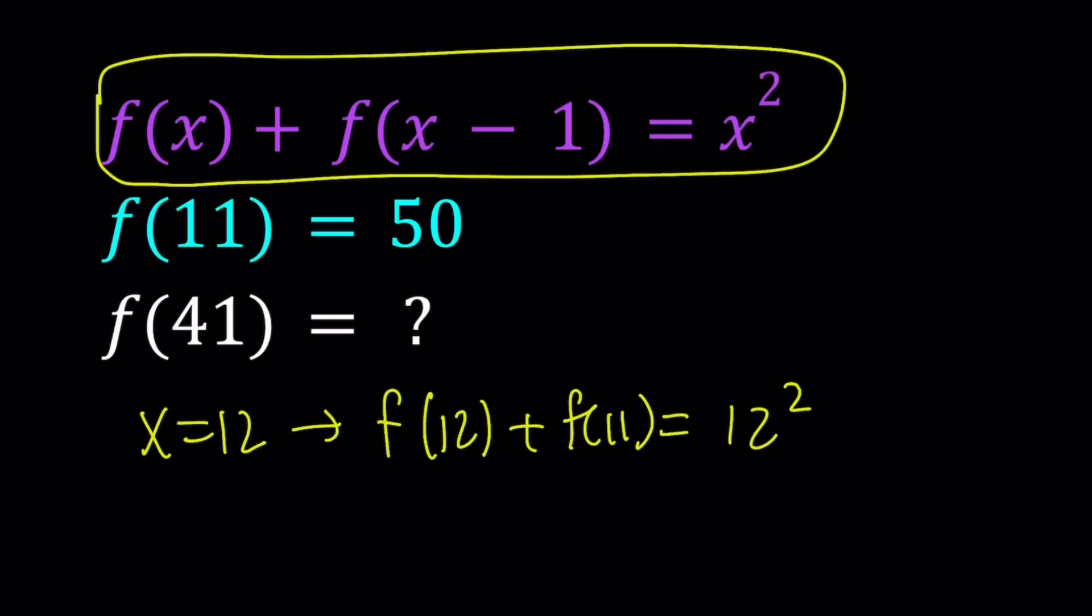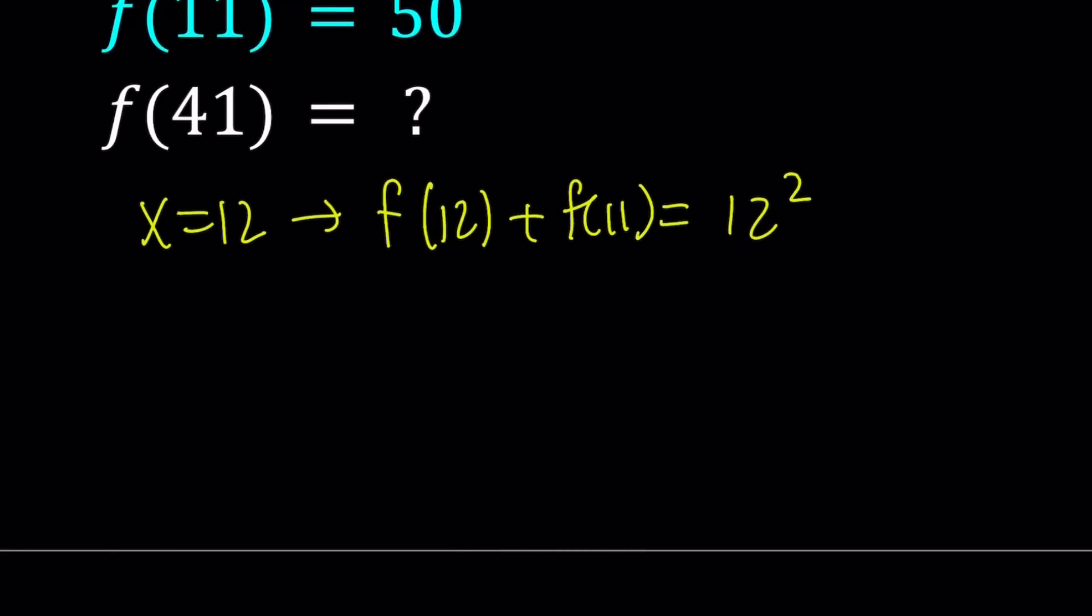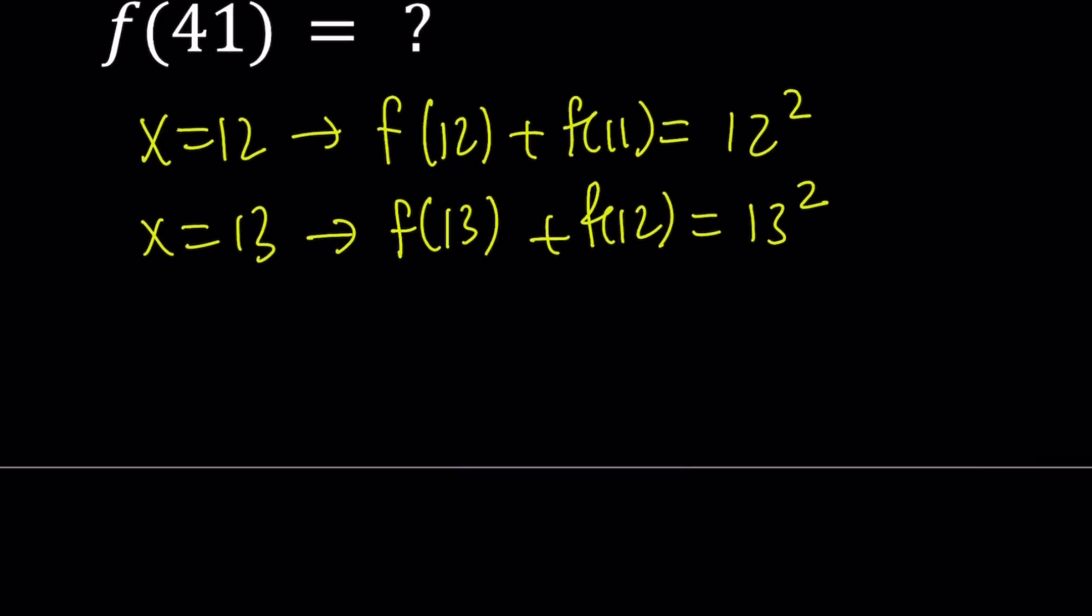Notice that the larger number is squared on the right hand side. Now we can basically keep doing this until we get a pattern. Our goal is to reach f of 41, so we're going to have to take some steps. But let's take a look at a couple values. If I replace x with 13, I get f of 13 plus f of 12 equals 13 squared.